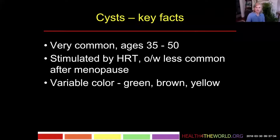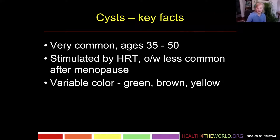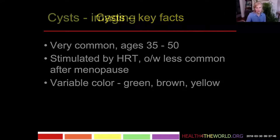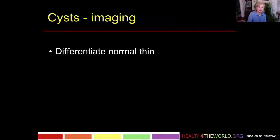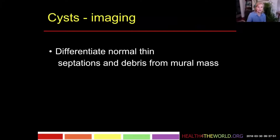Cysts have variable color when you aspirate and look at the fluid. It's usually kind of greenish, brownish, tan, yellow — not usually nice and clear, but sometimes it can be.